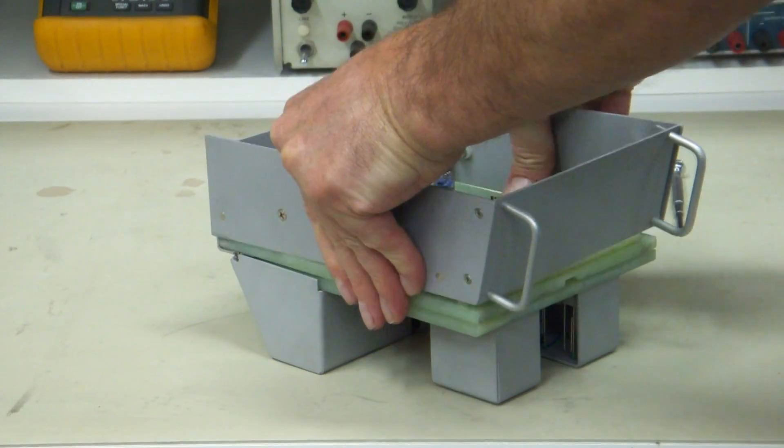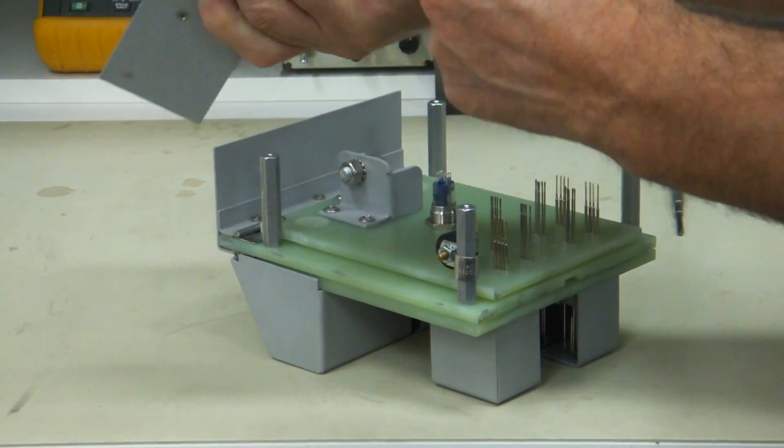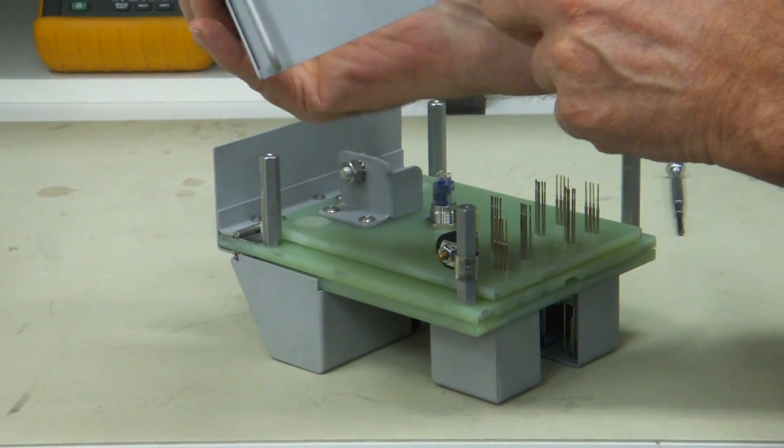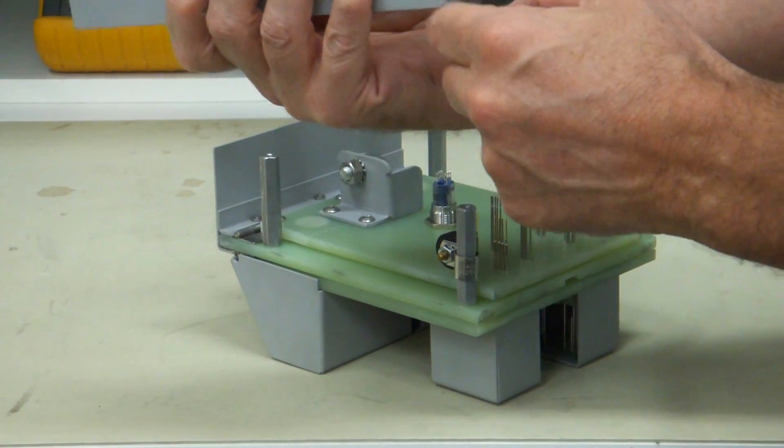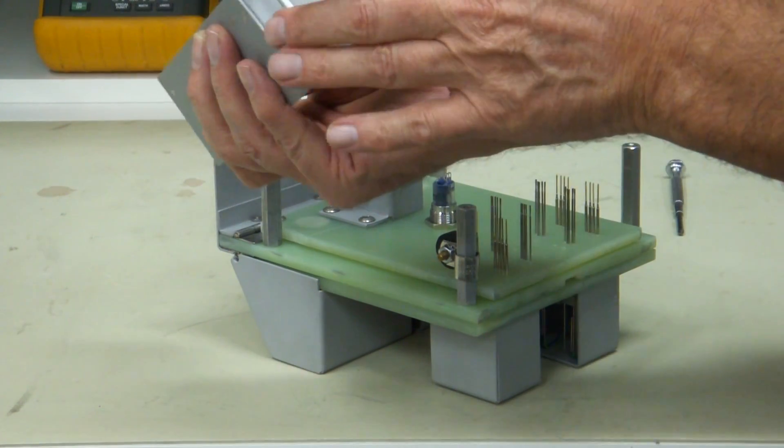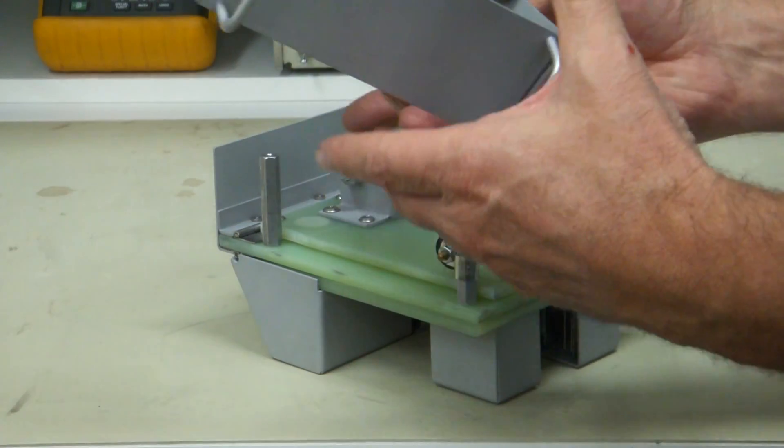And this comes off fairly easy too. You just lift it out and then you can remove your front plate for modification. If you want to put some LEDs or some switches in here, a start stop switch or something like that, you just take out these four flat head screws and this plate will come out. You can also remove these handles the same way. Get them out of your way with these flat head screws right here.